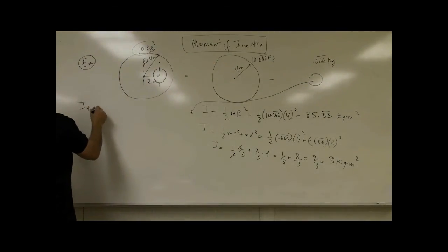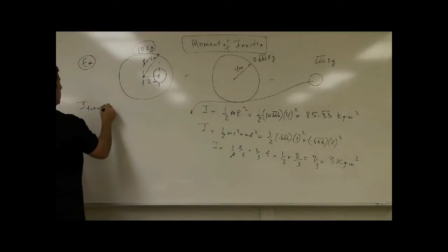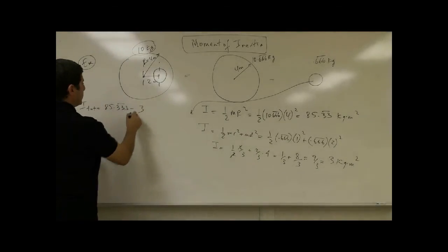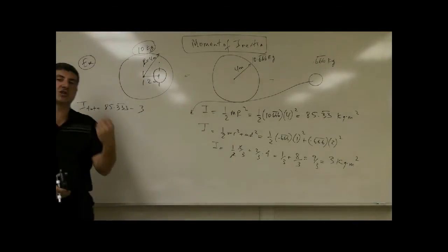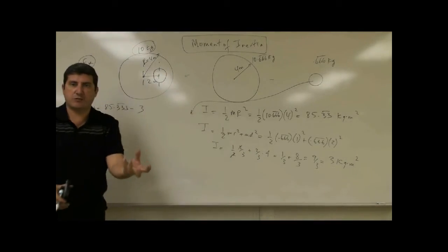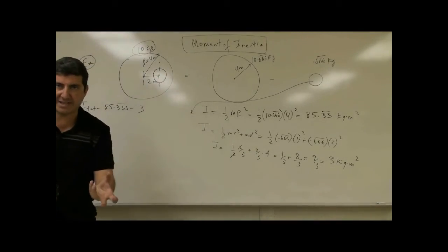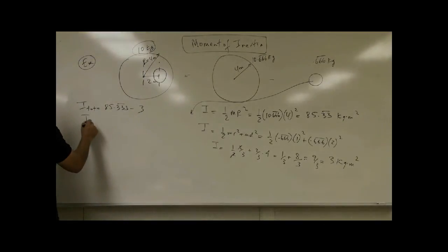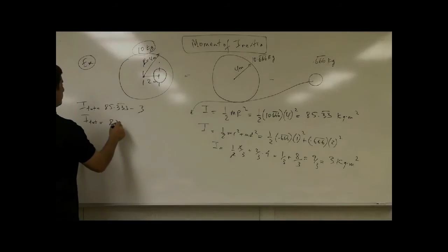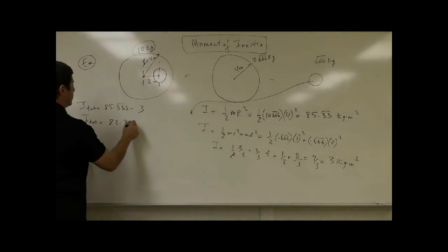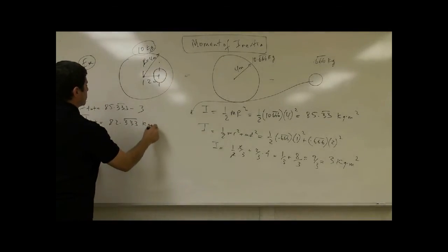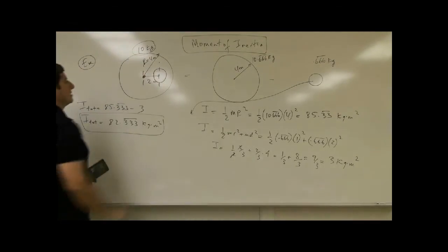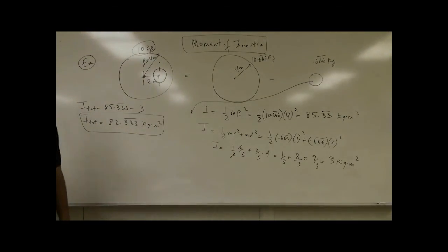So it's three kilogram meter squared. So what's the total moment of inertia of the disc with the hole? I total equals 85.3̄ minus three. You subtract the moment of inertia of the hole as if it was a mass, but it's a missing mass. And you end up having 82.3̄ kilogram meter squared.